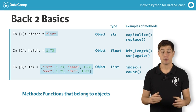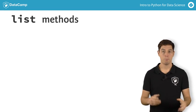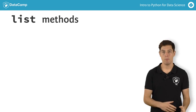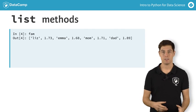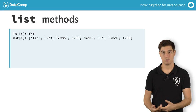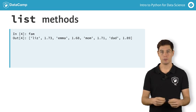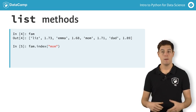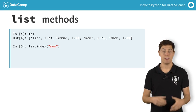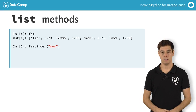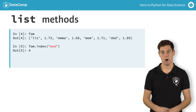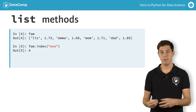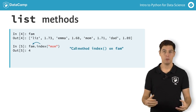Enough of the theory now. Let's try to use a method. Suppose you want to get the index of the string mom in the fam list. Fam is a Python object with the type list, and has a method named index. To call the method, you use the dot notation, like this. The only input is a string mom, the element you want to get the index for. Python returns 4, which indeed is the index of the string mom. I called the index method on the fam list here, and the output was 4.